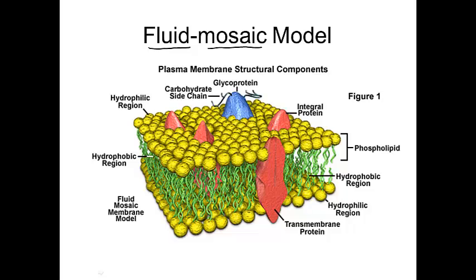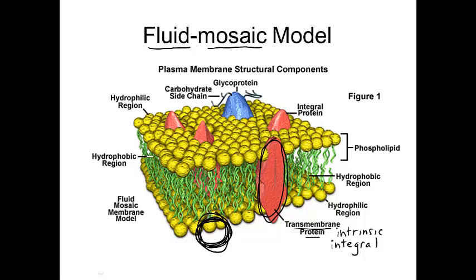There are different kinds of proteins that make up this mosaic, and we can divide them into two categories. Those proteins that span the entire membrane are called transmembrane proteins — other words for it are intrinsic proteins, and the word IB usually uses is integral proteins. The other types are proteins that are just on the outside or inside of the plasma membrane; these are called peripheral proteins, because they're on the periphery.